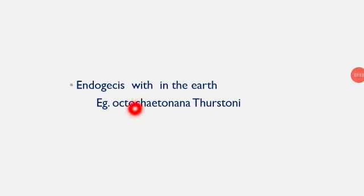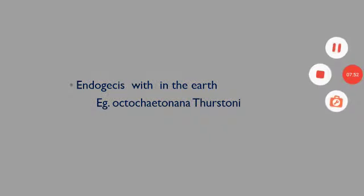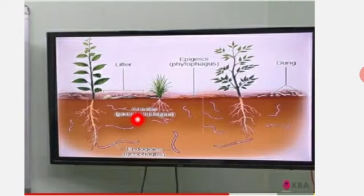The third type is Endogeic, derived from the Greek word for 'living within the earth.' These worms build extensive burrows that are temporary and horizontal. They feed on organic matter in the soil and are rarely spotted unless there is heavy rainfall that washes them to the soil surface. Example: Aporrectodea turgida. To summarize: Epigeic means 'upon the earth,' Endogeic means 'living within the earth,' and Anecic means 'up from the earth.'